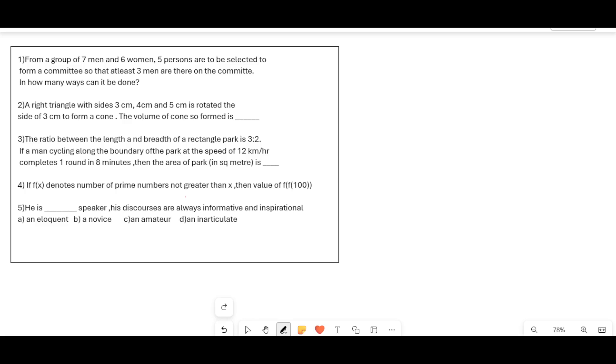From a group of 7 men and 6 women, 5 persons are to be selected to form a committee so that at least 3 men are there on the committee. In how many ways can it be done?